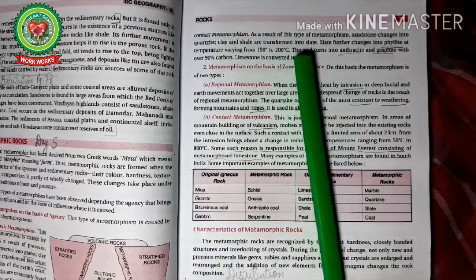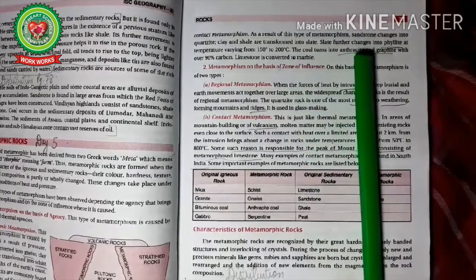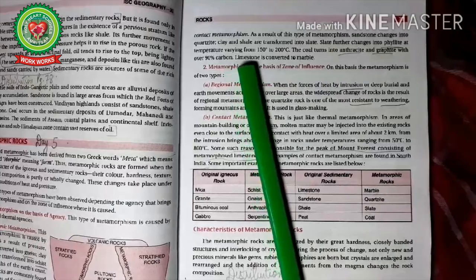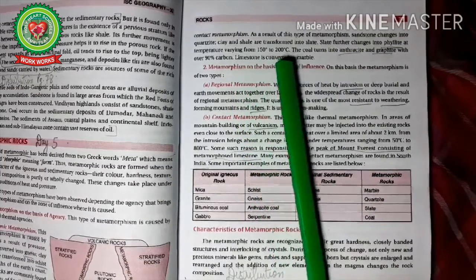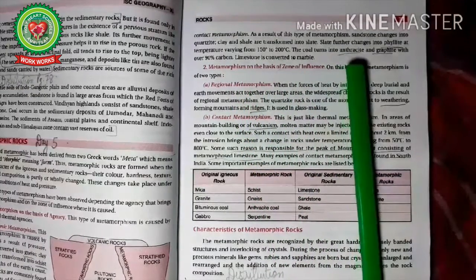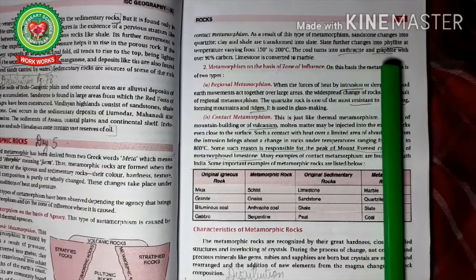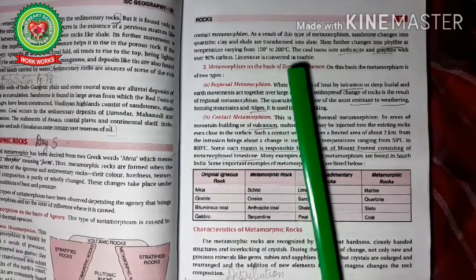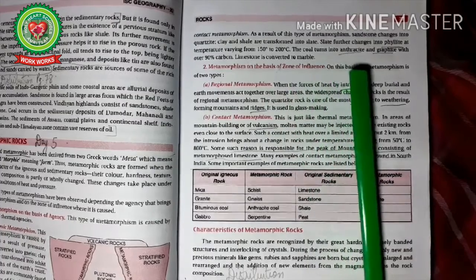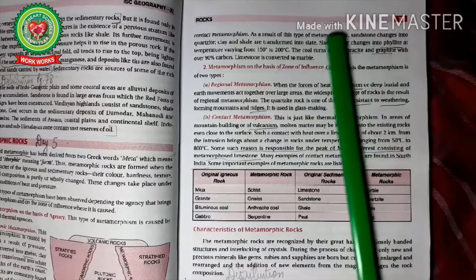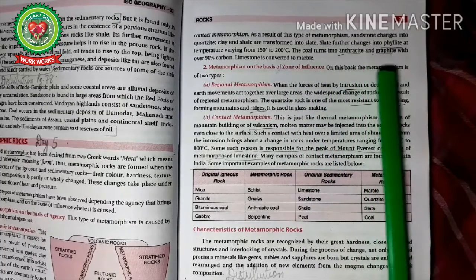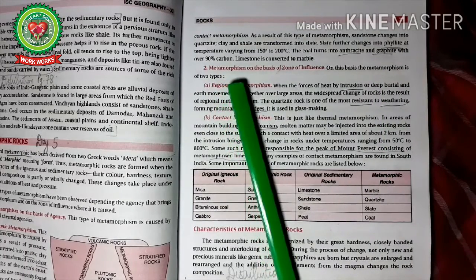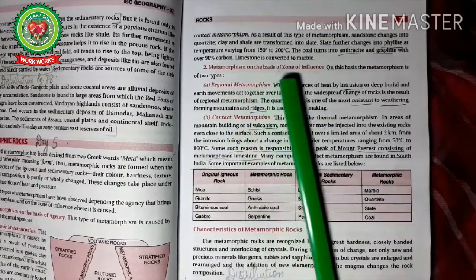As a result of this type of metamorphism, sandstone — which is a sedimentary rock — changes into quartzite. Clay and shale transform into slate. Slate further changes into phyllite at very high temperature, between 150 degrees Celsius to 200 degrees Celsius. Coal turns into anthracite, which is the best type of coal. Graphite has 90% carbon. Limestone is converted to marble.